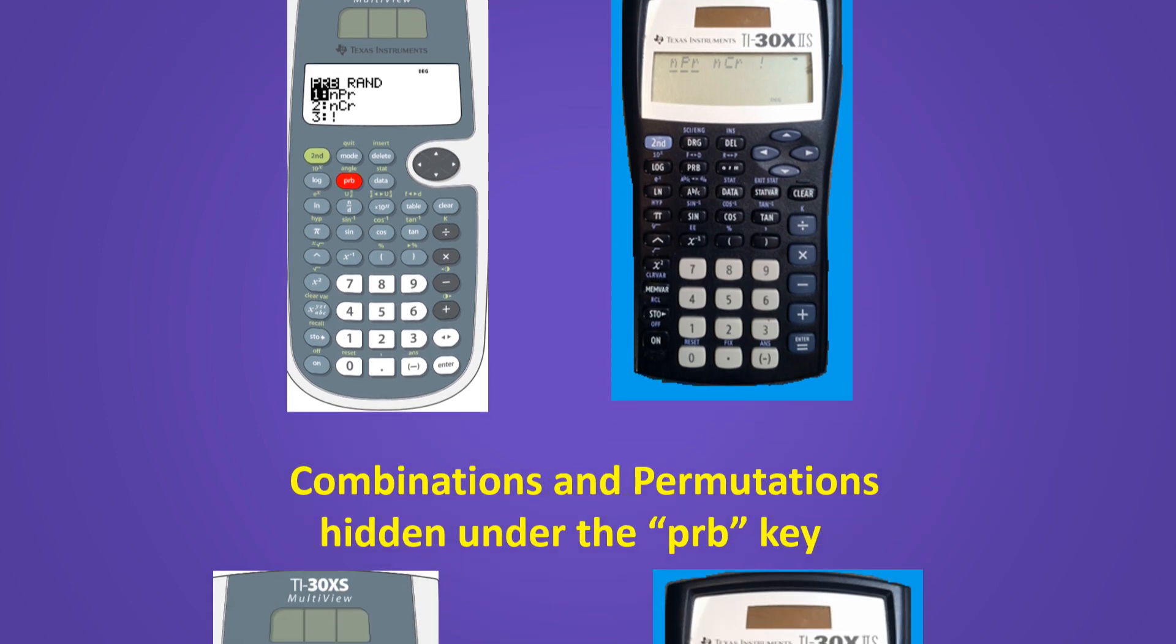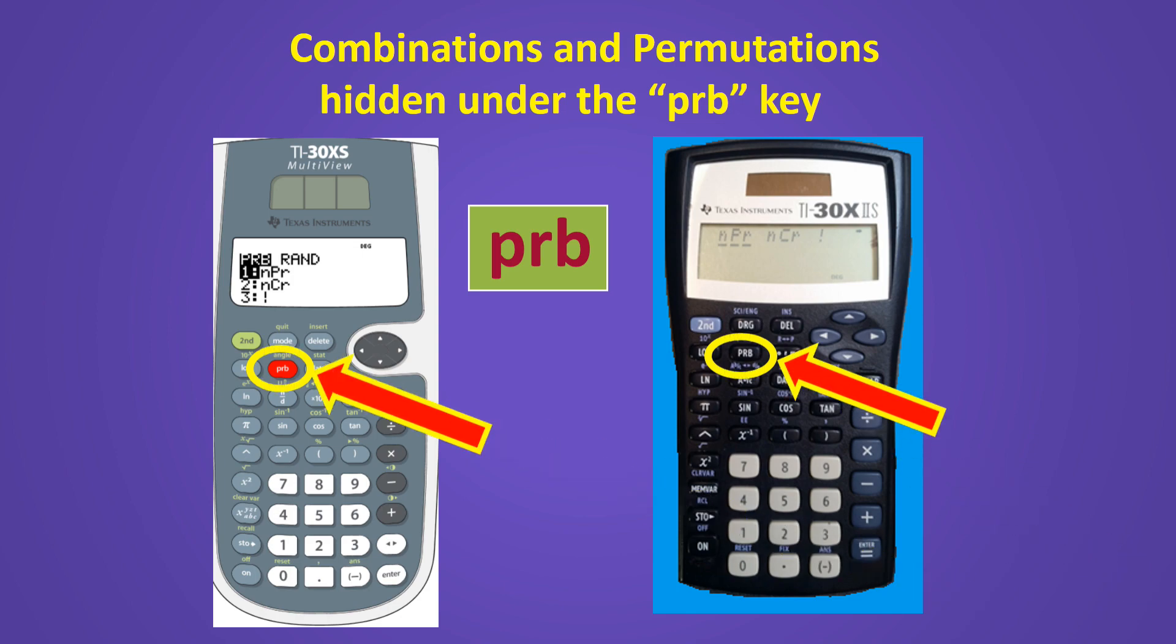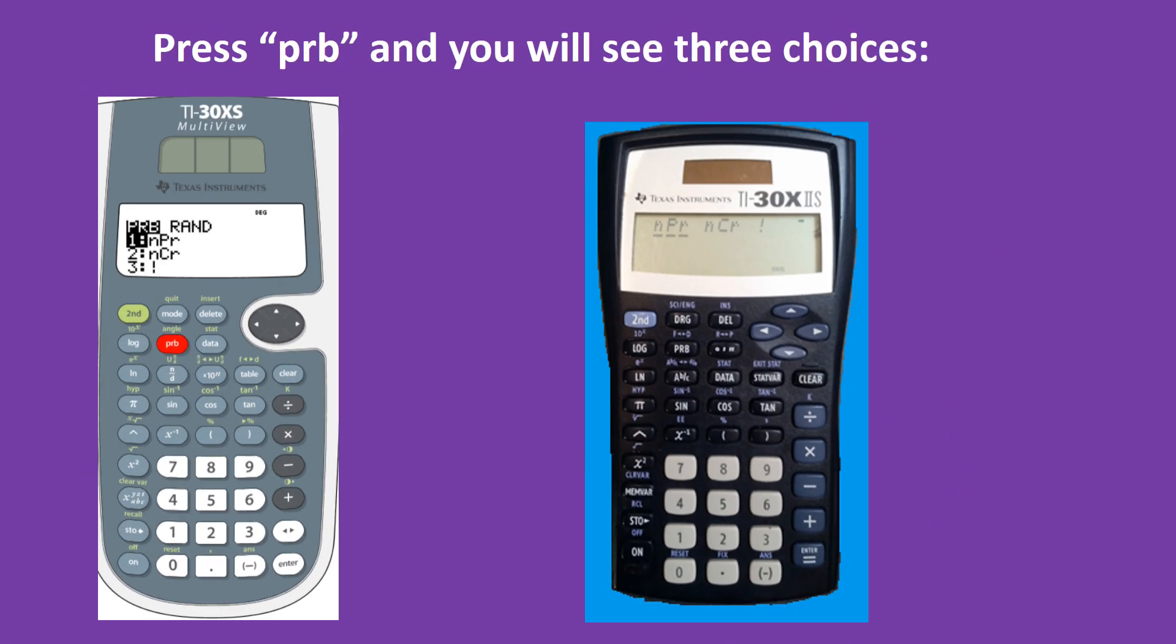Let's take a look at the calculator more closely. Look for a key on your calculator that says PRB. It should be here. Now press that PRB button and your screen should look like the one pictured here. You can see three choices listed on the screen.